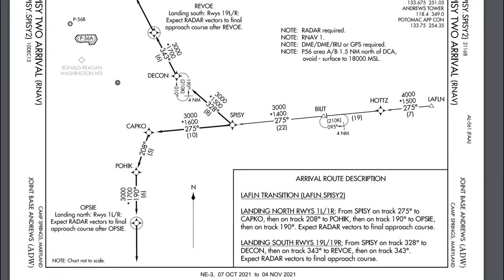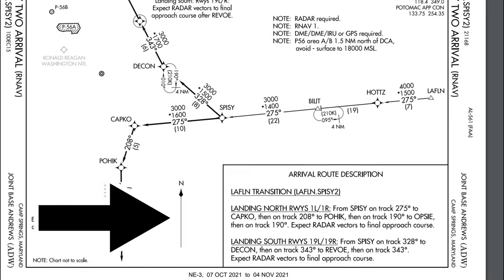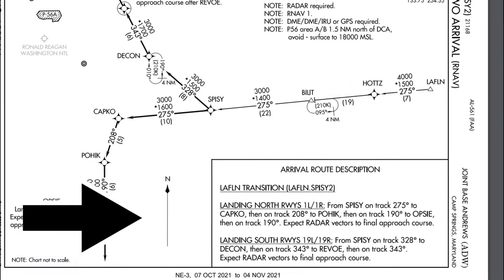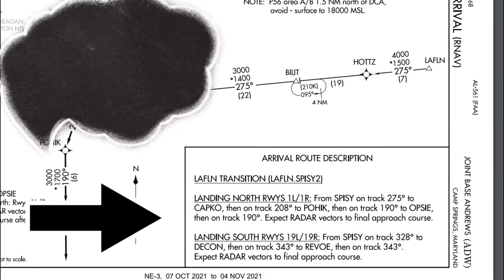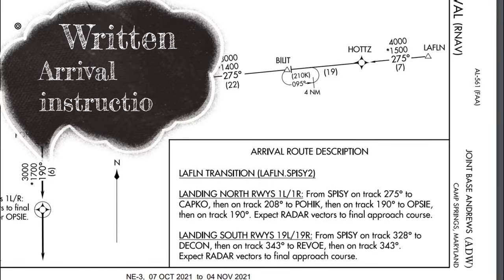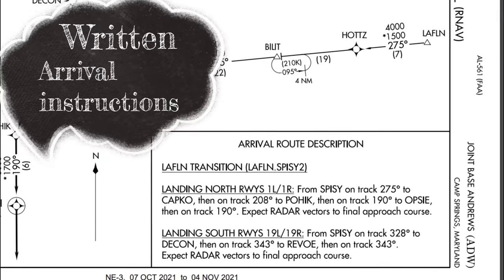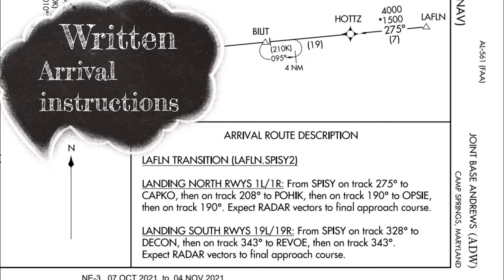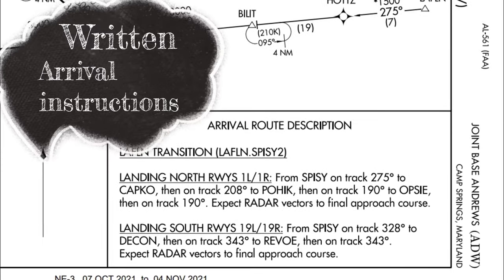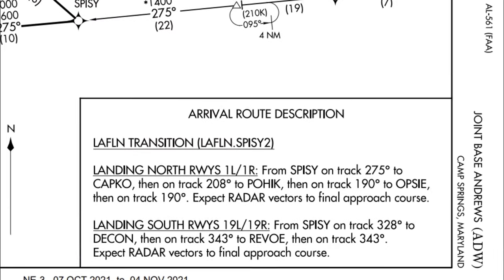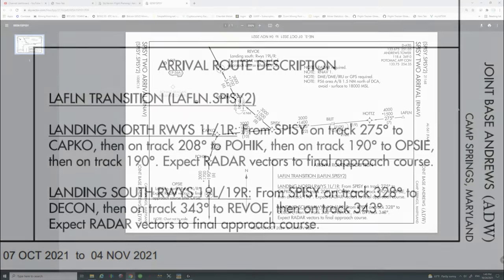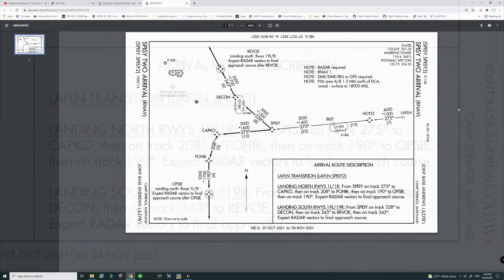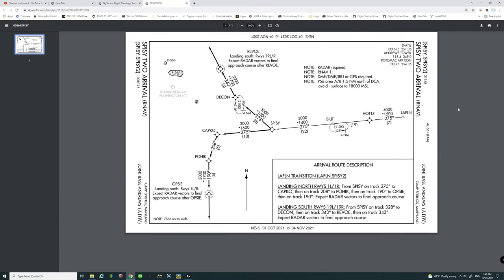Down at the bottom, this particular box contains the written description of the approach depending on which runway you're going to be landing at. So let's take a look at this from right to left.